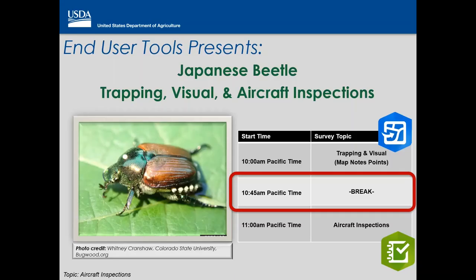Welcome back — it's right on the hour and time to start on aircraft inspections. This section covers Japanese beetle aircraft inspections, which are done using the ArcGIS Survey123 mobile application. Most of you stayed on, so I'll try not to repeat myself too much.